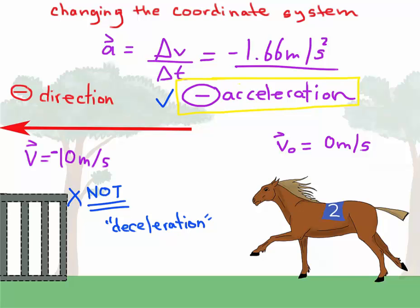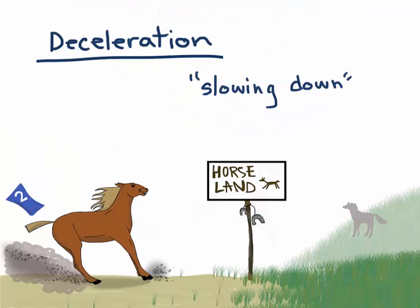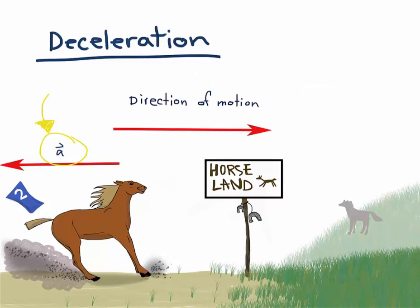Let's talk about deceleration now. Assume that the horse has found freedom and slides to stop in excitement. In this case she is slowing down or decelerating. What this means is that the acceleration will be opposite to the direction of motion.